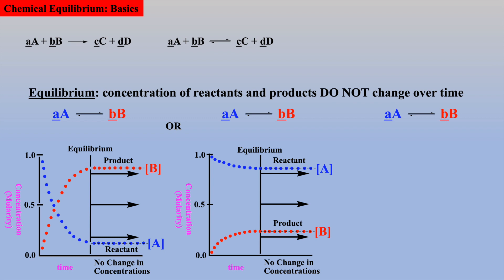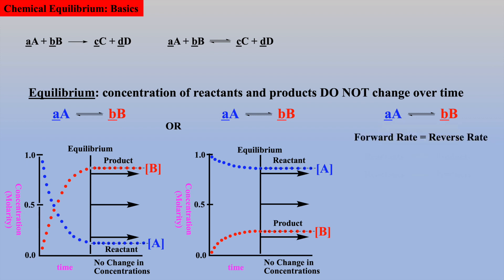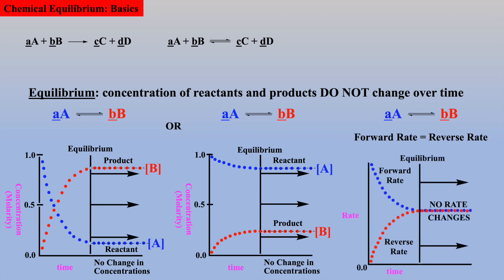Remember, a system at equilibrium is a dynamic system. In other words, reactants are going to products, and products back to reactants all the time. Thus, we can also say that when a system is at equilibrium, the forward rate equals the reverse rate. No changes in rates also implies the concentrations of reactants and products will not change over time.